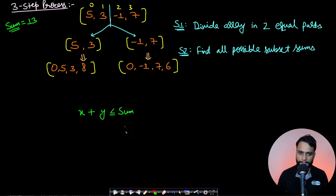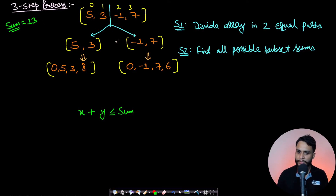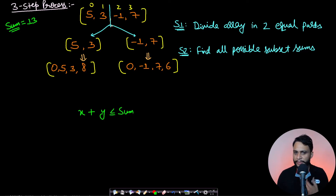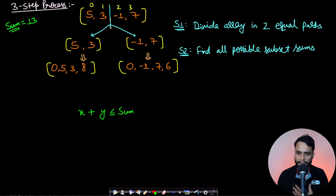Now let us look at a better approach. This algorithm works as a three-step process. In step one, take the array and divide it into two parts from the middle. If you have an even number of elements you can equally divide it; if odd, I personally prefer to take one extra element on the left side. So step one is simply dividing the array into two equal halves.